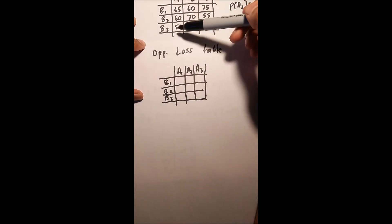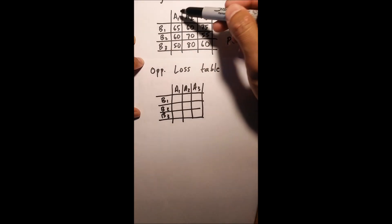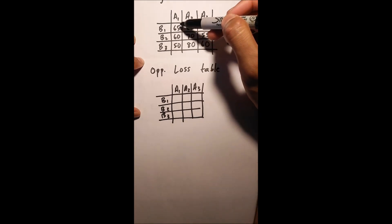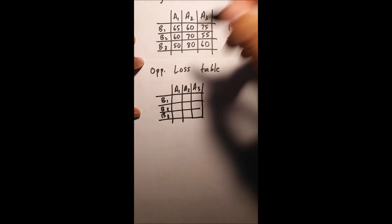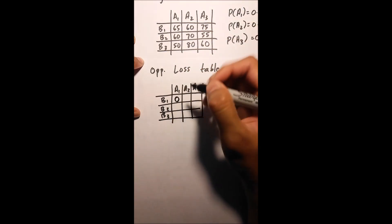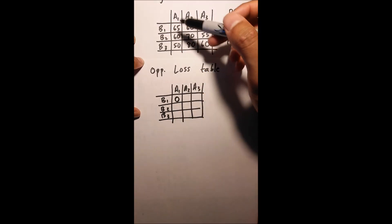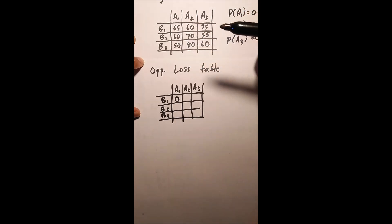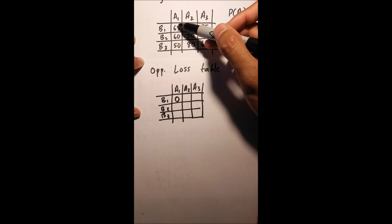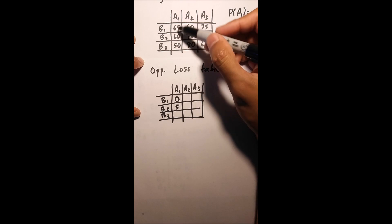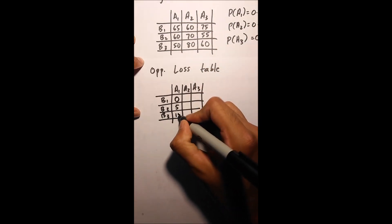Okay, so to create an opportunity loss table, we always look at it column by column. So I'm going to start with column number A1. What you're basically looking for is the highest value. So in A1, my highest value is 65. And wherever your highest value is, you're going to replace that with a 0 in your opportunity loss table. Now to find the other two values in this table, all I'm going to do is take my highest value and subtract each of the other two values in my payoff table. So for this one, it would be 65 minus 60, which is 5. For the last one, it's 65 minus 50, which is 15.